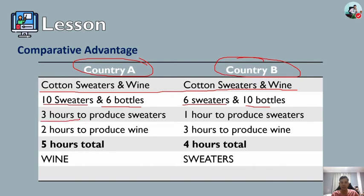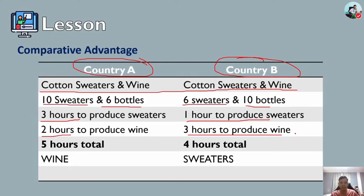Country A takes 3 hours to produce 10 sweaters and 2 hours to produce 6 bottles of wine — a total of 5 hours. Country B, on the other hand, takes 1 hour to produce sweaters and 3 hours to produce wine — a total of 4 hours for Country B.